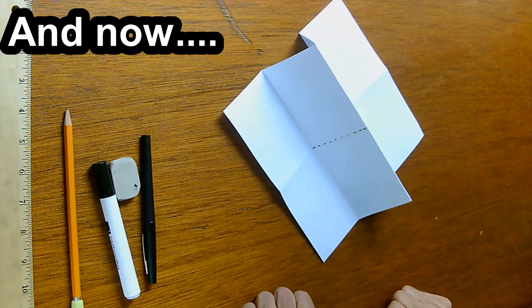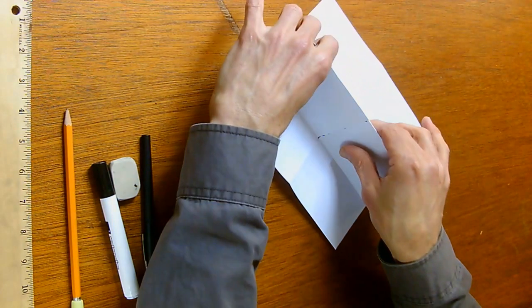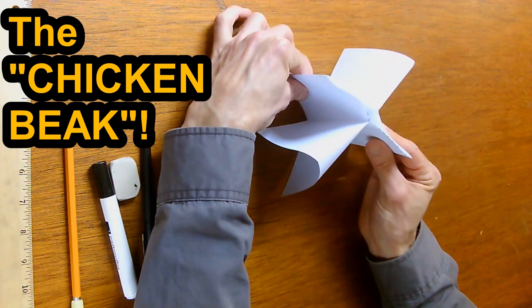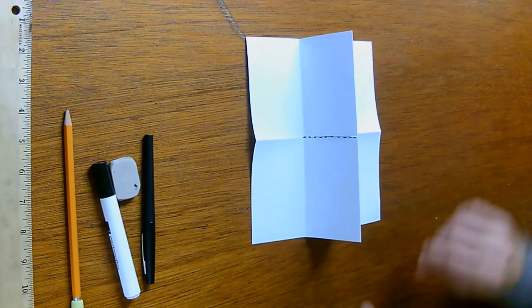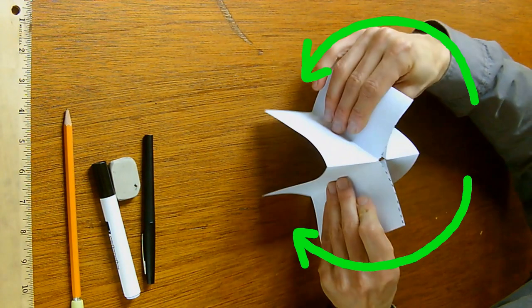And now, the part you've been waiting for, the famous chicken beak maneuver. We open up that chicken beak to make the letter X. Actually, let me show you that from another side, another angle. So here we go. Opening up the chicken beak.